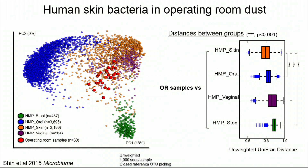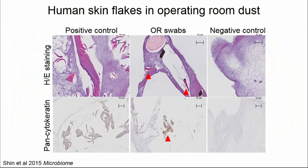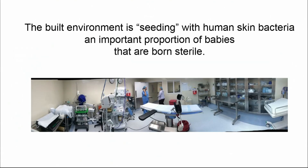We also stained the dust using two different staining methods and found that operating room swabs contained human skin flakes. So the built environment is indeed seeding with human skin bacteria an important proportion of babies that are born, especially in urban places.